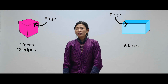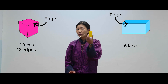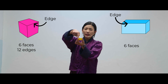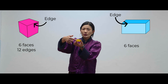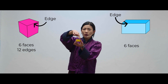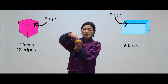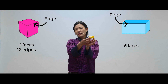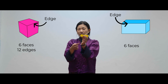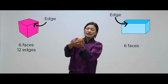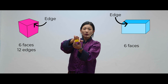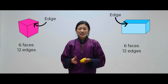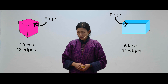Let's count the number of edges for a rectangular prism: 1, 2, 3, 4, 5, 6, 7, 8, 9, 10, 11, and 12. A rectangular prism also has 12 edges.